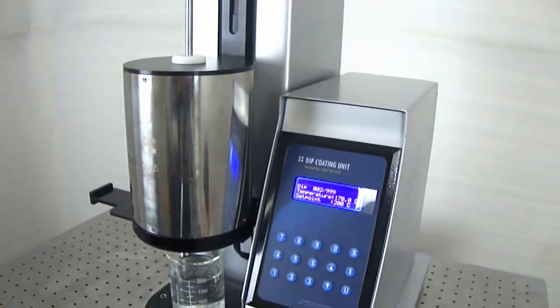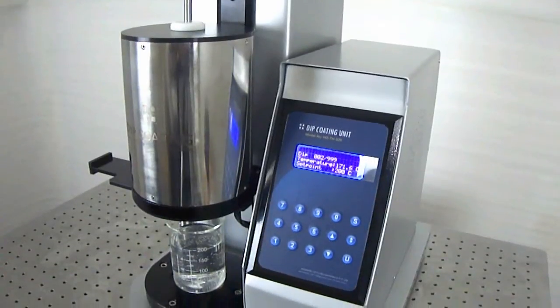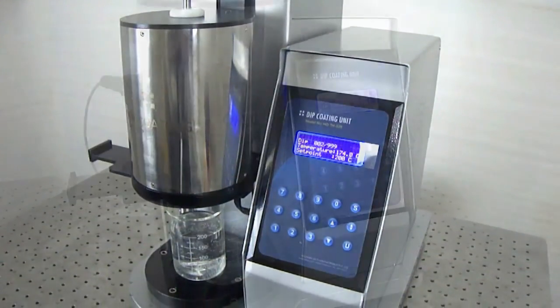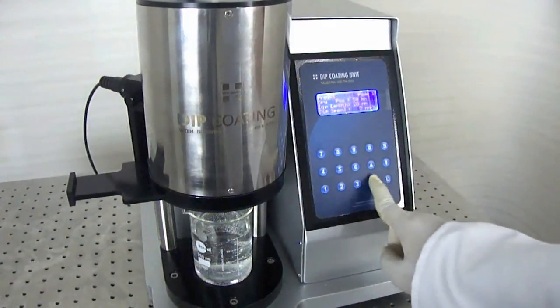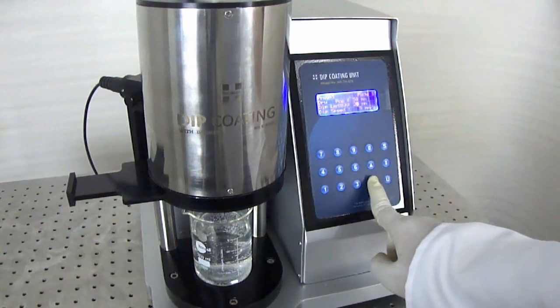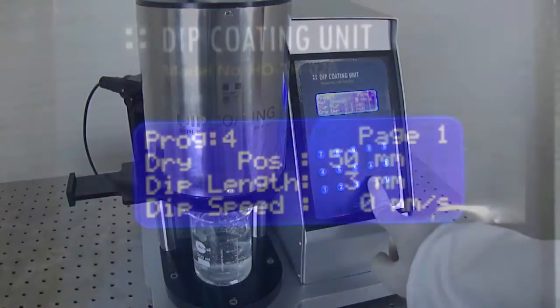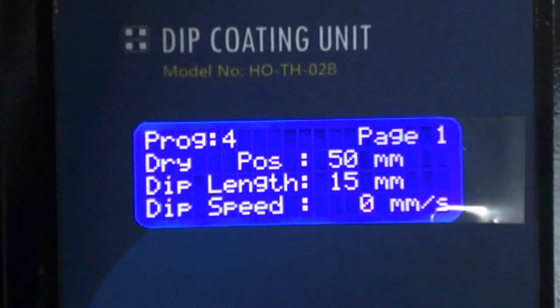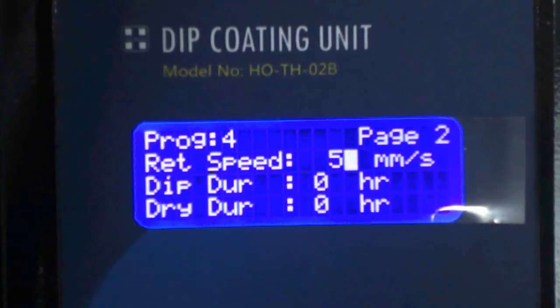The unit provides a user-friendly front panel with keyboard and LCD display to enter all dipping and withdrawal parameters. Parameters such as speed, duration, temperature of infrared dryer, number of dips etc can be set as per requirements. The software provides a 5 program memory.